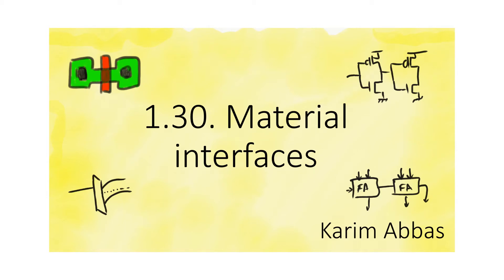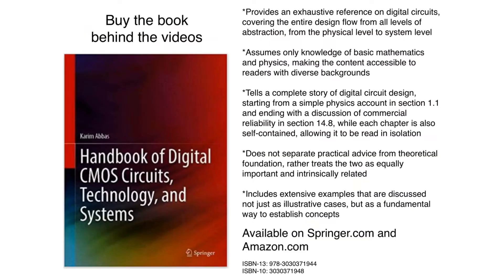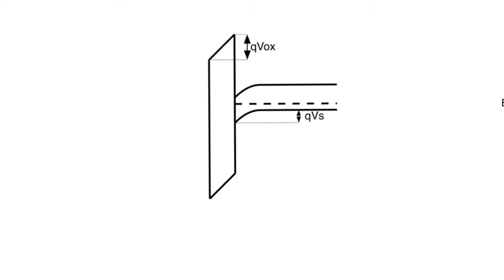In this video, we continue talking about what happens when we put different materials together. This is the band diagram of a piece of insulator next to a piece of semiconductor, and this could be silicon in this case.